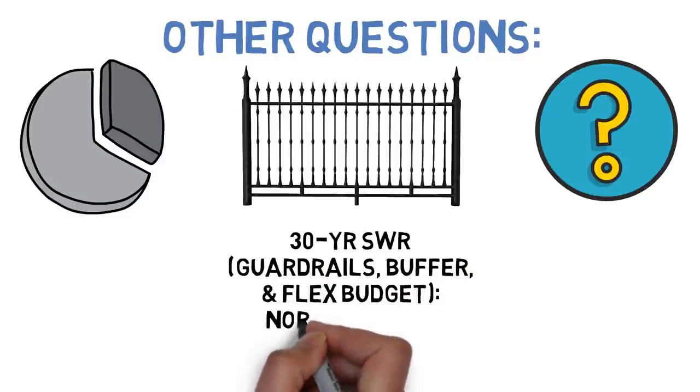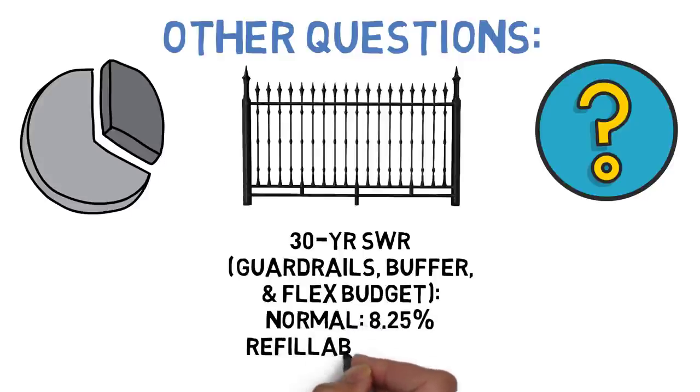then the 30-year minimum safe withdrawal rate would rise to something like 8.25%. However, if you refilled the cash buffer then the minimum 30-year safe withdrawal rate falls to around 8.09% and the average withdrawal rates fell by roughly the same amount as before.